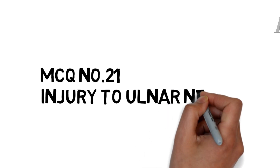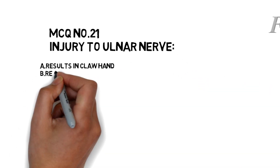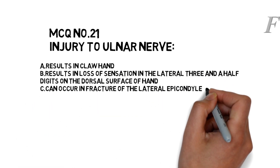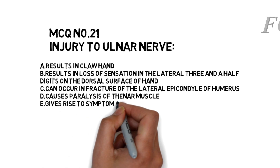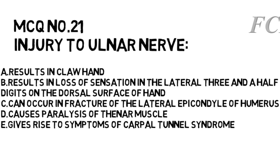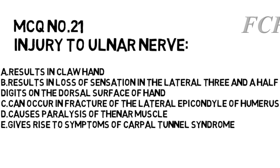Question number 21 is injury to the ulnar nerve. Option A is it results in claw hand. Option B is it results in loss of sensation in the lateral three and half digits on the dorsal surface of the hand. Option C is it can occur in fracture of the lateral epicondyle of the humerus. Option D is it causes paralysis of the thenar muscles. Option E is it gives rise to symptoms of carpal tunnel syndrome.